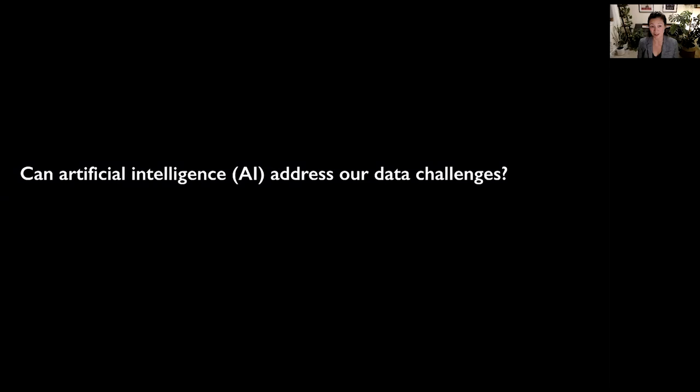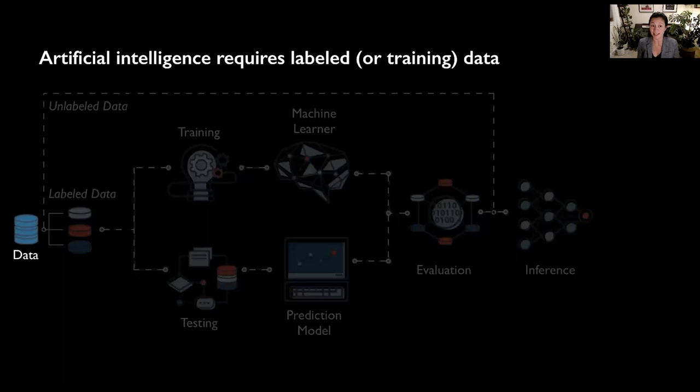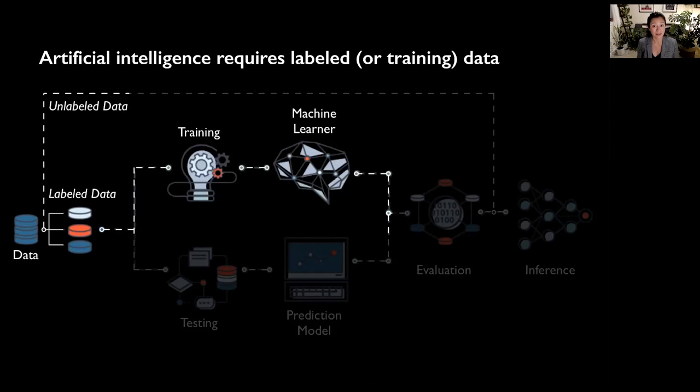Researchers are looking to artificial intelligence to address our data challenges in visual data processing. However, artificial intelligence requires a lot of data. Data can be divided into two types: labeled, where we know everything that's in it, and unlabeled, where we don't know what's in it.